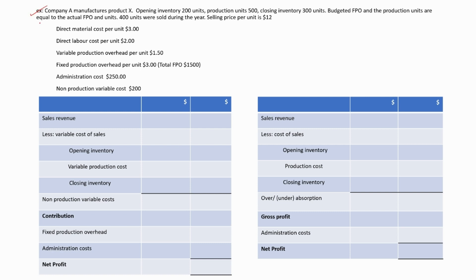This is the example we did earlier, so we can use the marginal cost per unit and absorption cost per unit here. Company A manufactures product X: opening inventory 200 units, production units 500 units, closing inventory 300 units. Budgeted fixed production overhead and production units equal the actual figures, meaning there will be no overall under-absorption. 400 units were sold during the year, selling price per unit is $12. Now we know the marginal cost per unit is $6.5 and absorption cost per unit is $9.5.